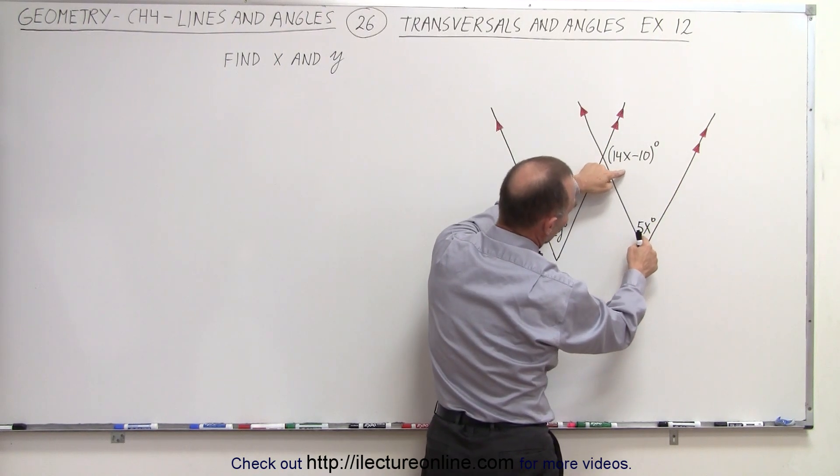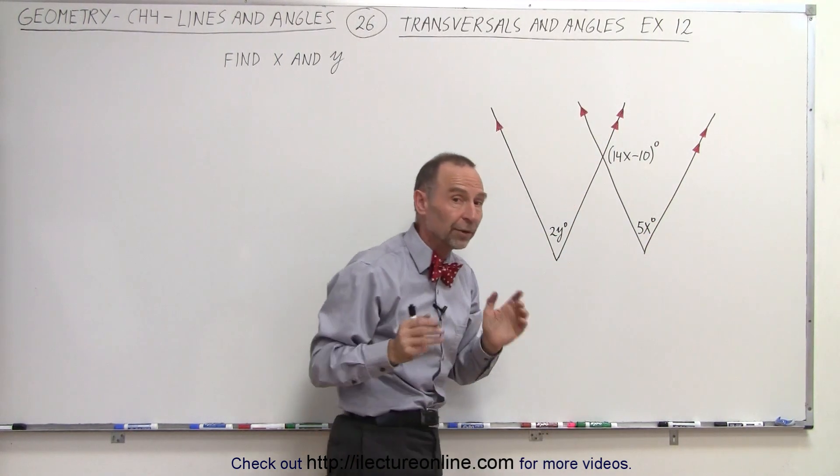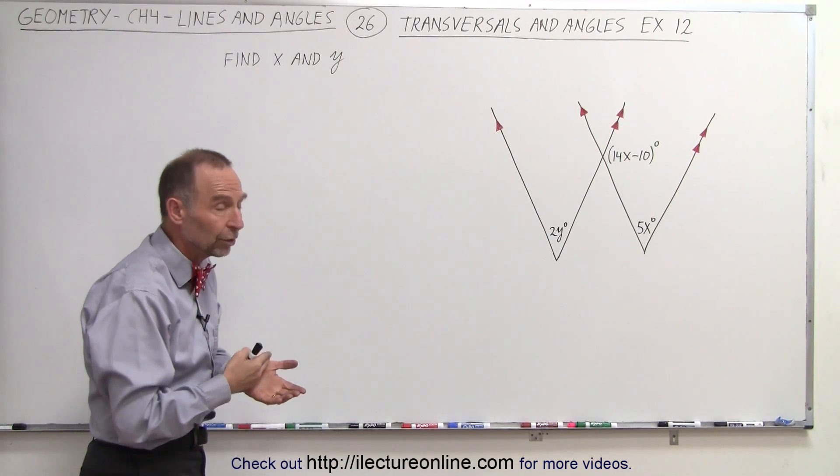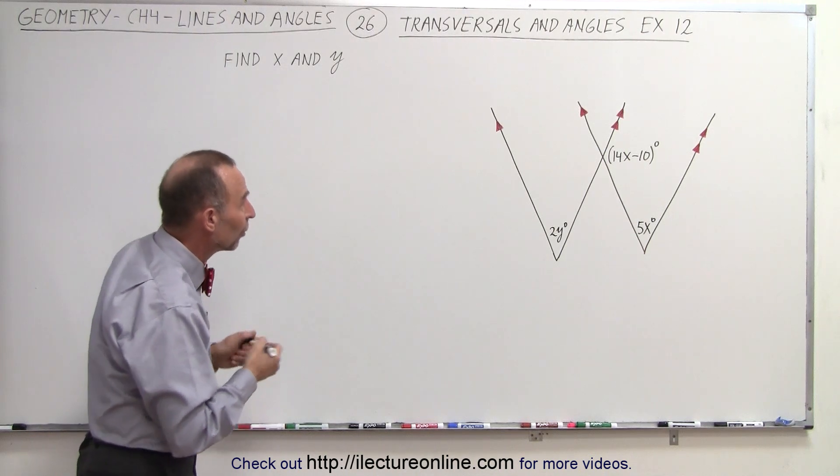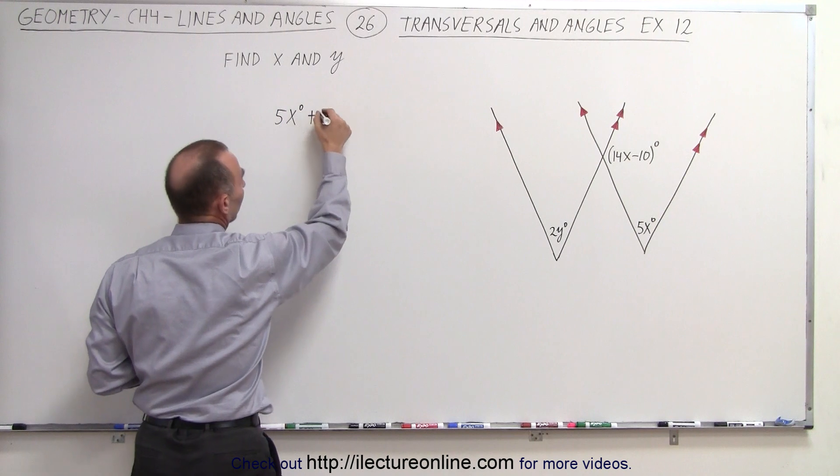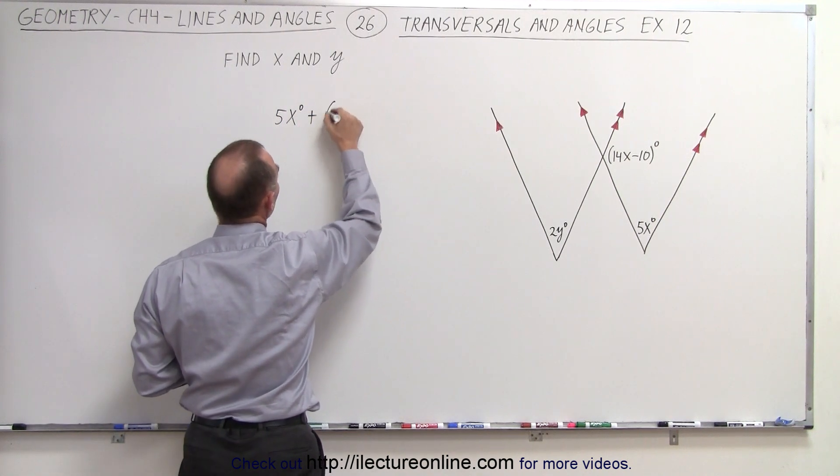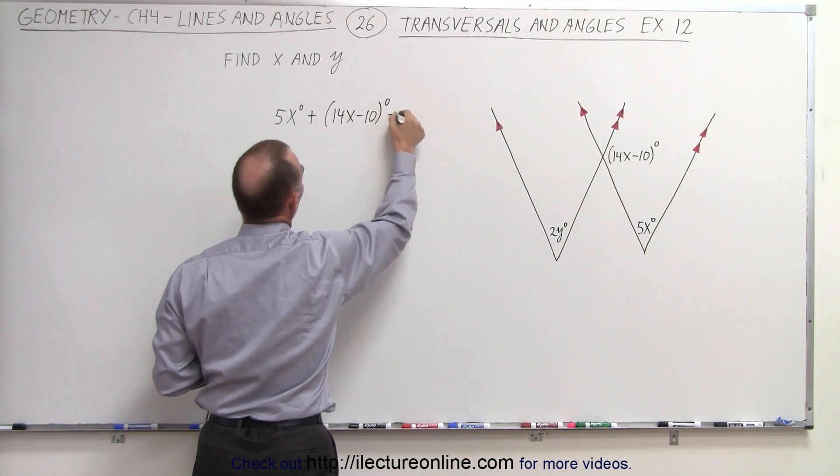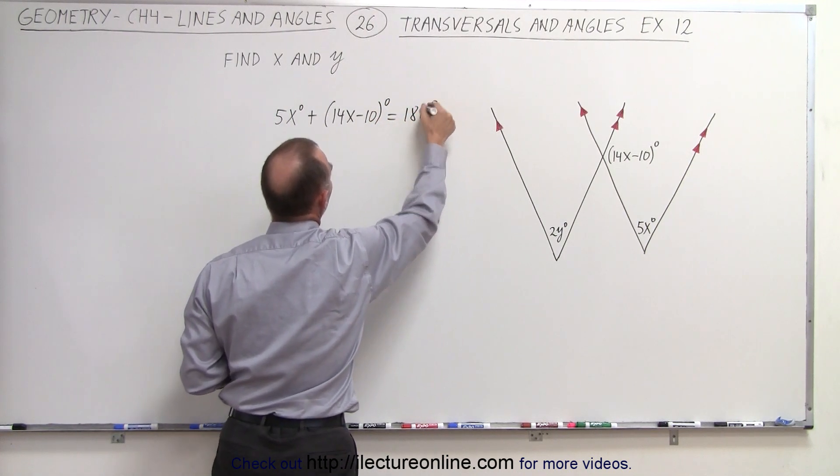In that case, we can see that these are two consecutive interior angles, and by the theorem of two consecutive interior angles, we know that their measure must add up to 180 degrees, which means that 5x degrees plus 14x minus 10 degrees must add up to 180 degrees.